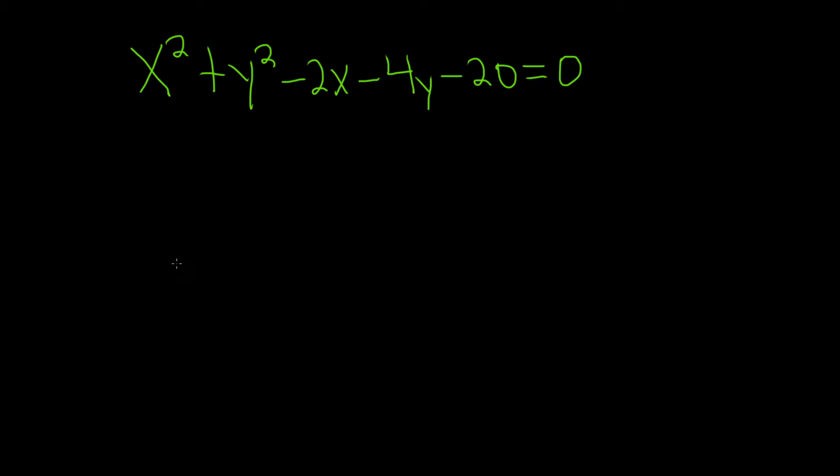So the first step when we're completing the square is to group all of the x's together and group all of the y's together and get rid of this constant. So let's do that.